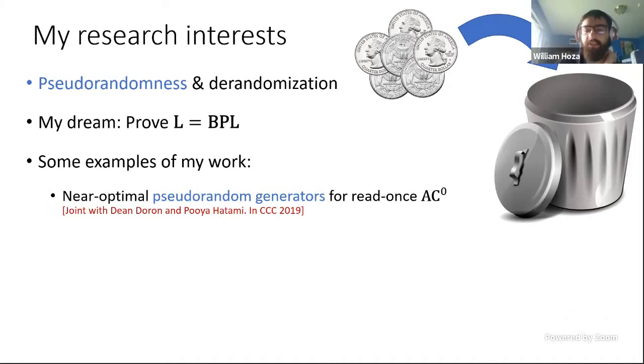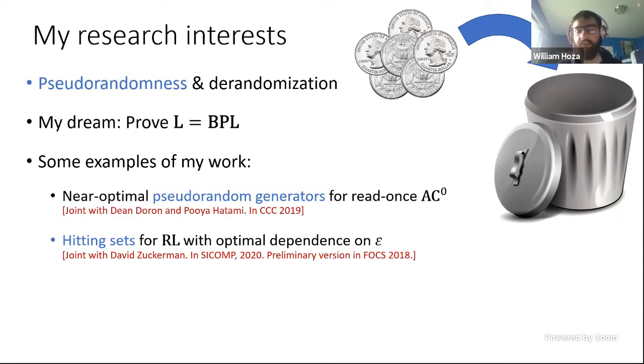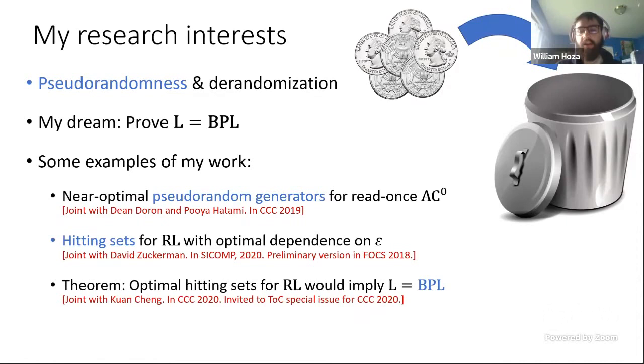So let me just give you an idea of some things that I've done failing that. I like to work on pseudorandom generators. I like unconditional constructions of pseudorandom generators. So for example, Dean Duran, Puya, Hatami, and I designed the first near-optimal pseudorandom generators for read-once AC0. Pseudorandom generators, I guess, are the most standard approach to proving a de-randomization theorem, something like L equals BPL. And I think they're also really elegant mathematically. I'm also interested in less conventional approaches for de-randomization. So for example, hitting sets. A hitting set is a sort of a one-sided version of a pseudorandom generator. And David Zuckerman and I designed hitting sets for RL with optimal dependence on epsilon, this threshold parameter.